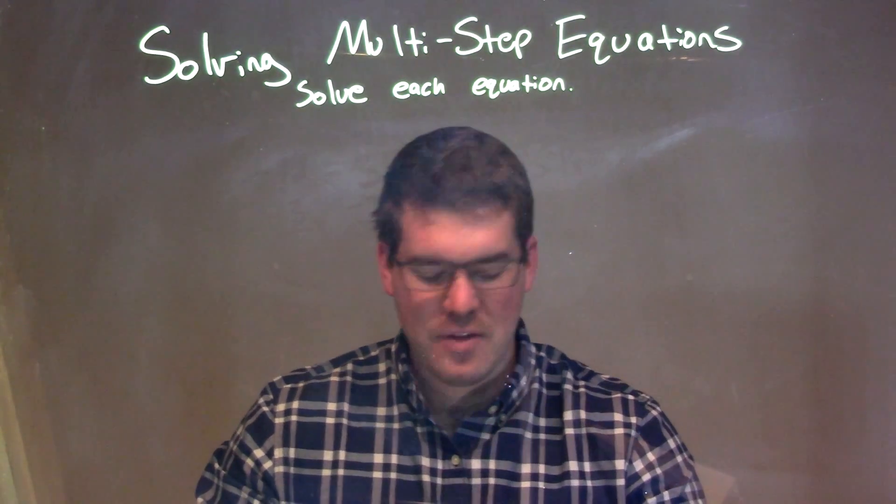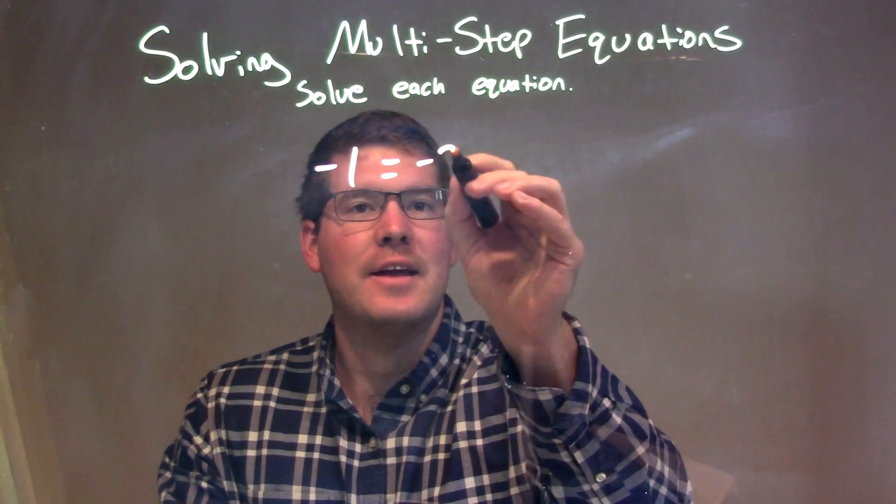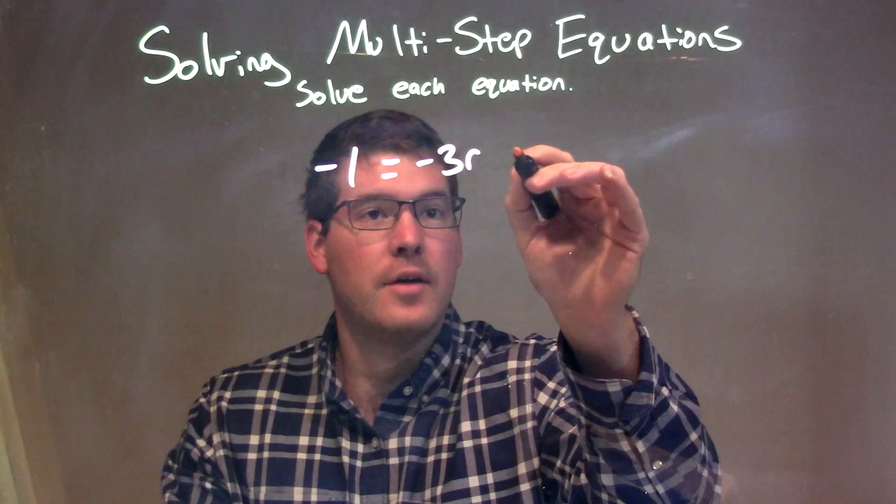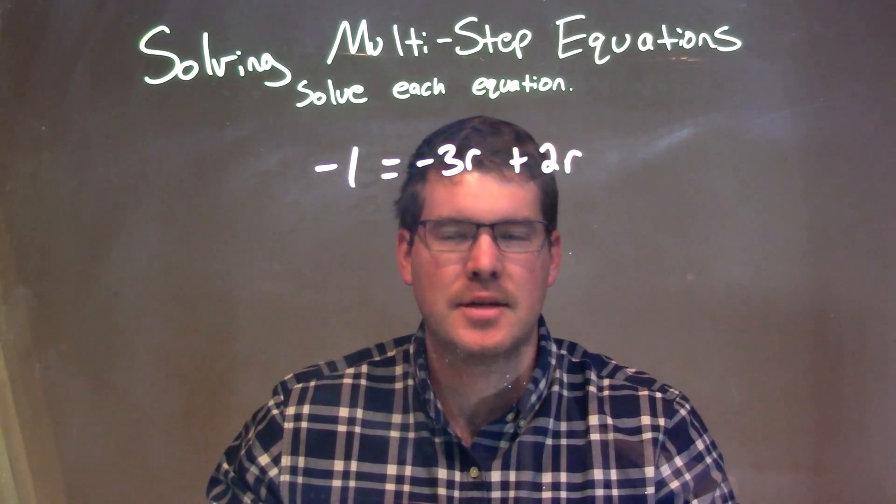So, if I was given this equation, negative 1 equals negative 3r plus 2r, well, what I want to do is combine my like terms on each side.